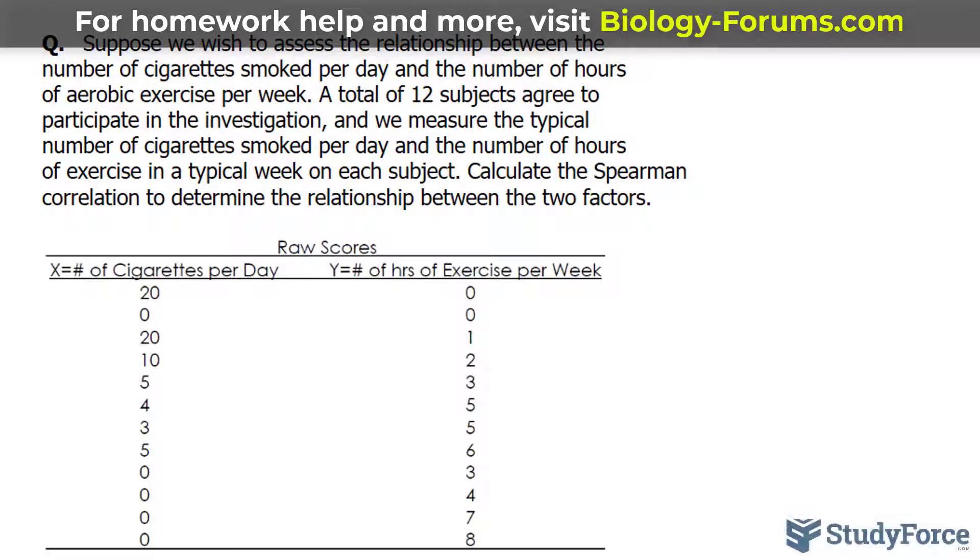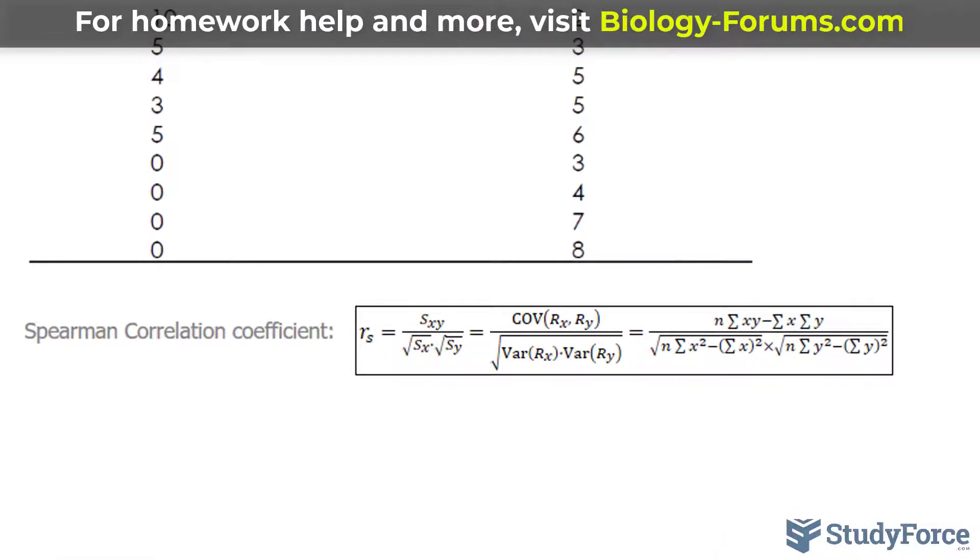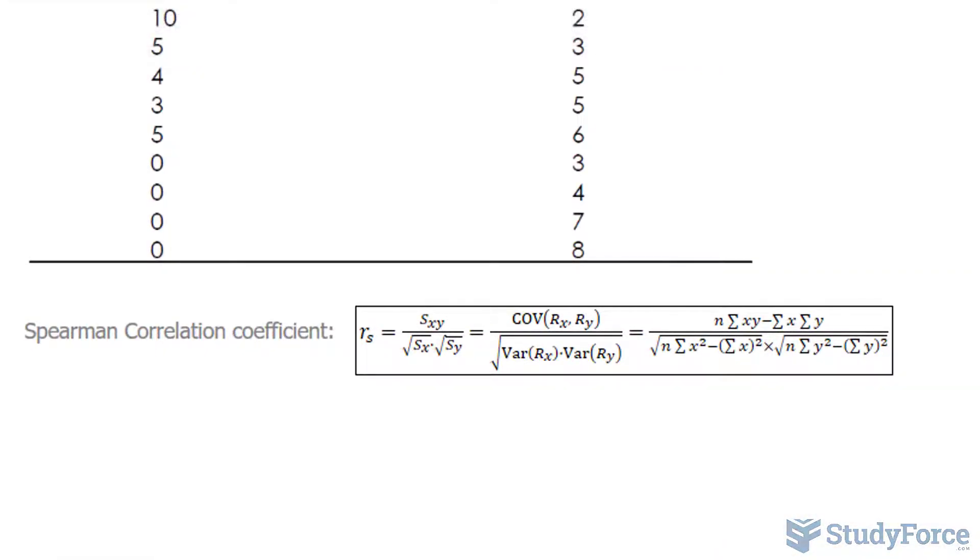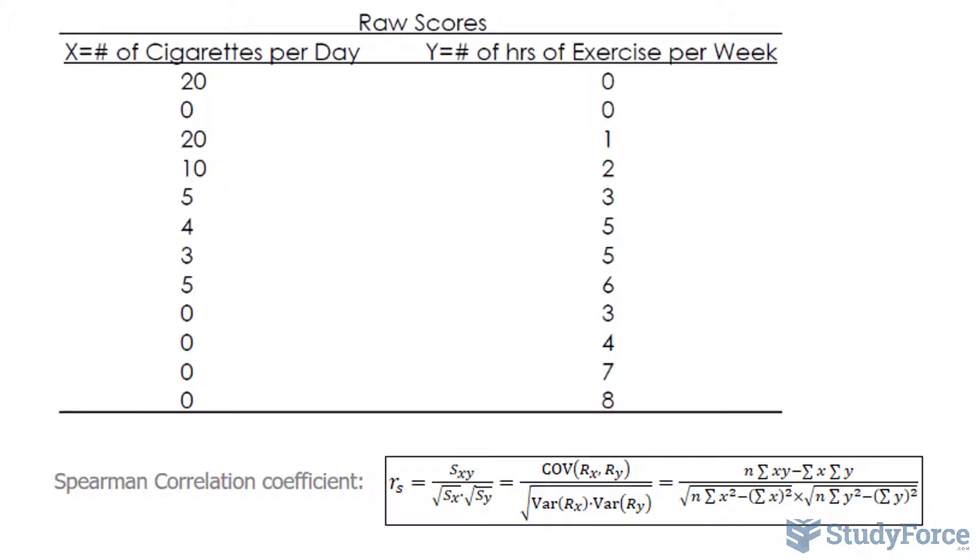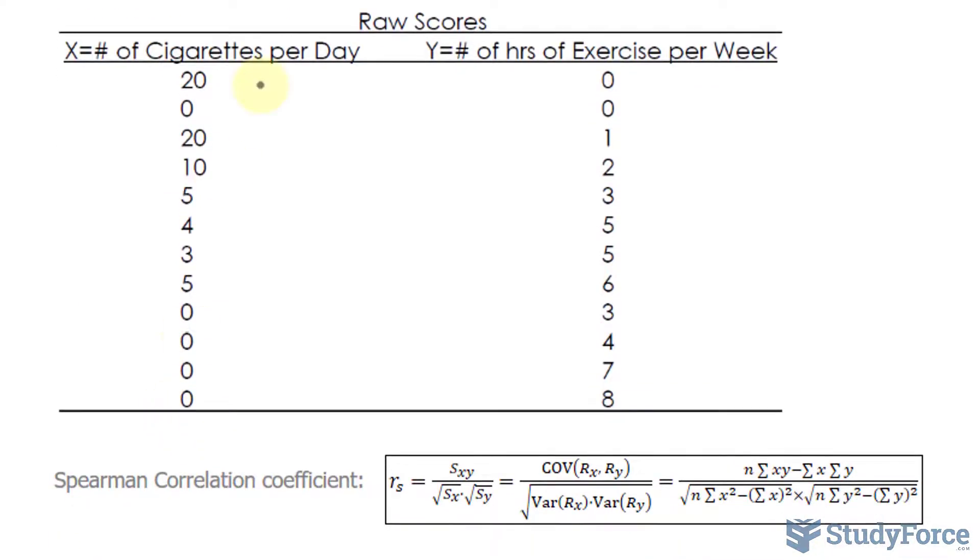The formula that we'll be using to do this is shown underneath and it's the exact same thing as the Pearson Correlation. Notice the formula is we take the covariance of x and y and we divide it by the variance of the x and the y variable. And that's shown right here. Now, before we can use this formula, we need to rank both of these columns.